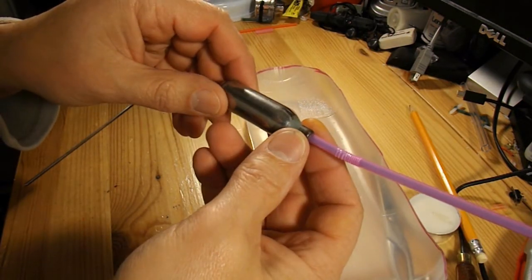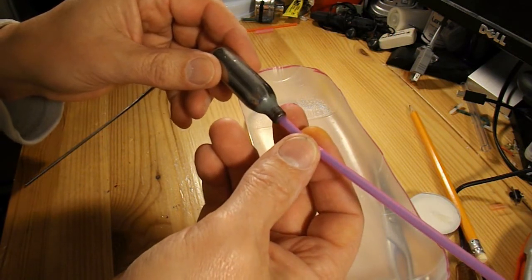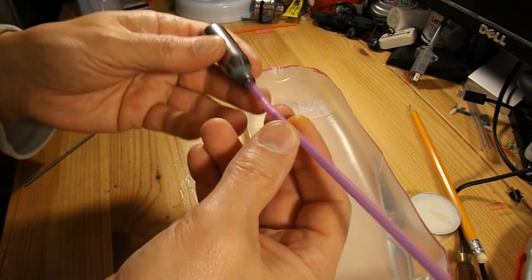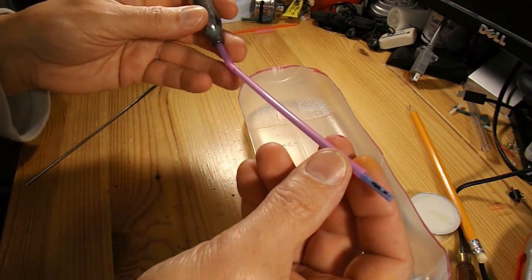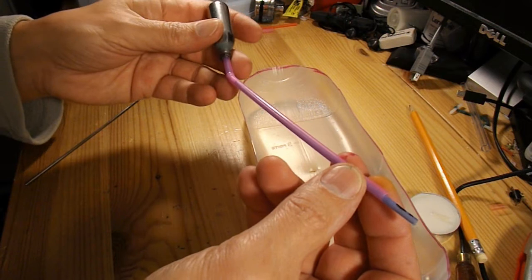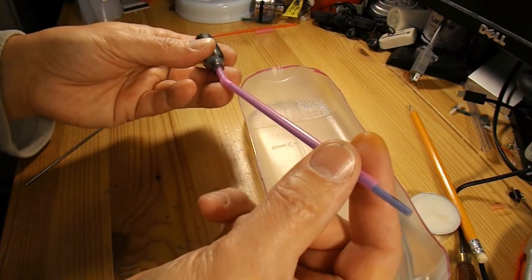If you watched my previous pop-pop boat that's just using the single straw at the back, you'll know that I need to get another straw up the inside so we can actually squirt water in before the boat will start.